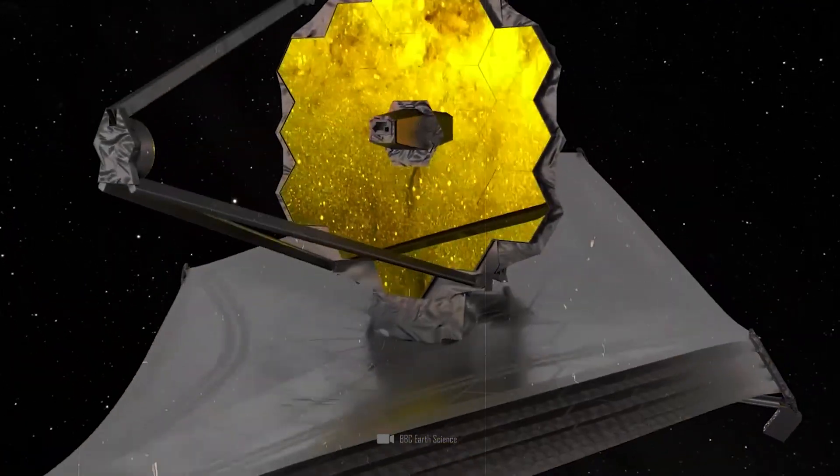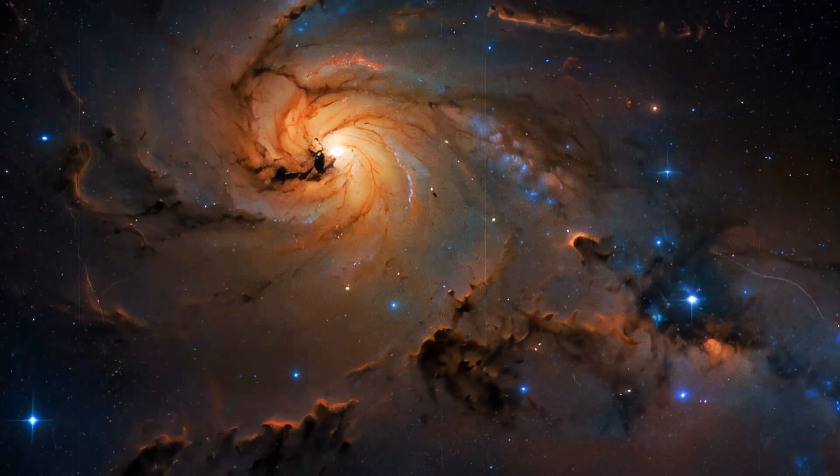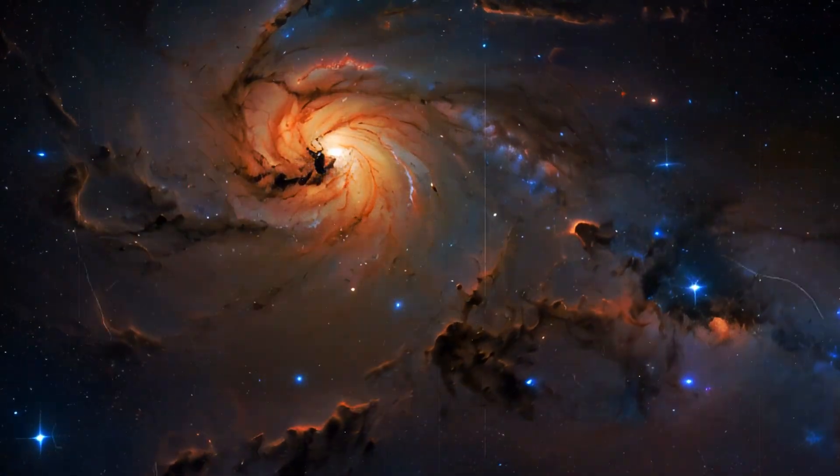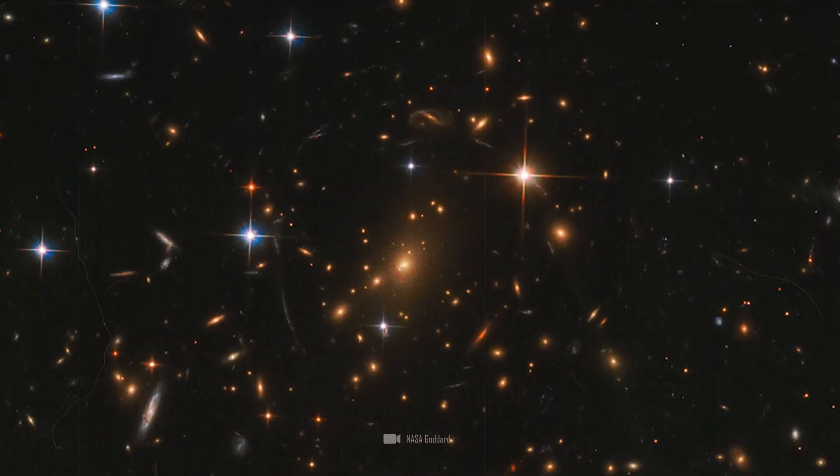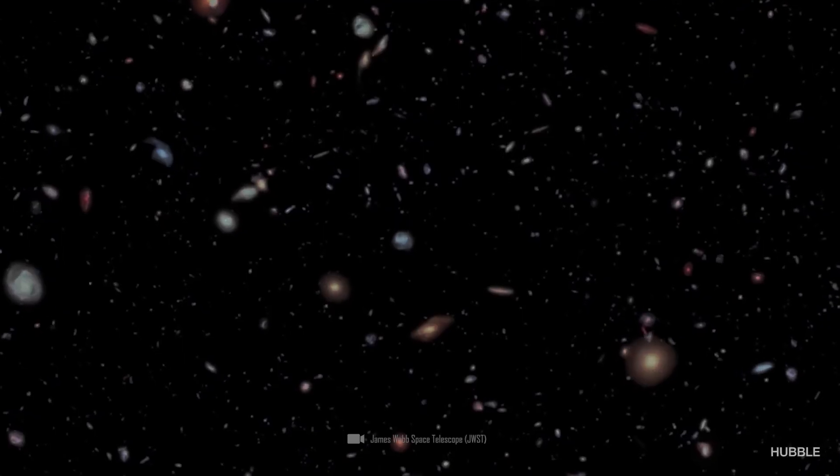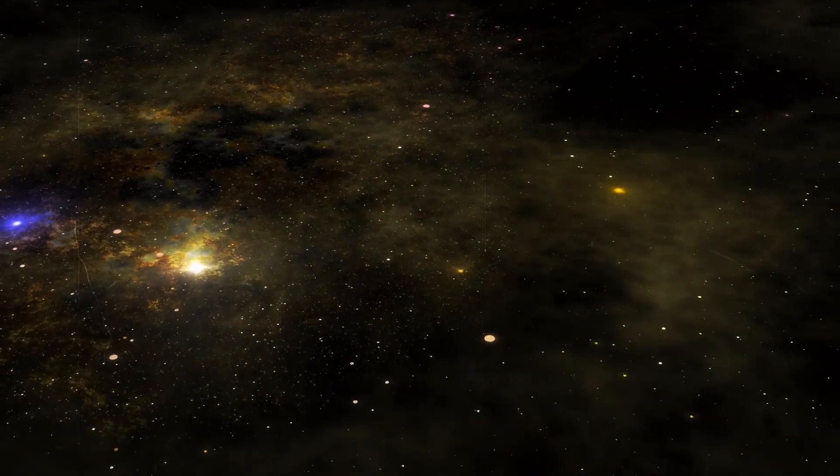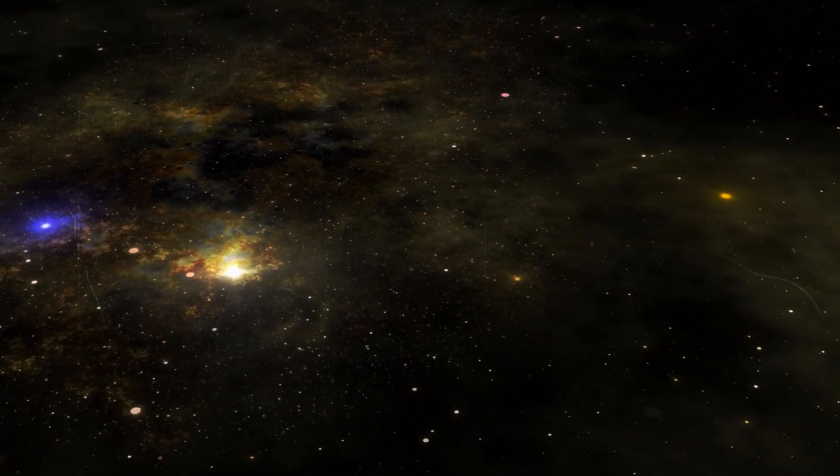The JWST may have reached the most distant point in the observable universe and shown us structures that are almost impossible. Using the gravitational lensing effect, in which light is bent and amplified by the gravity of massive objects, the JWST has observed five extremely dense protoglobular clusters.